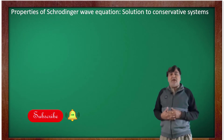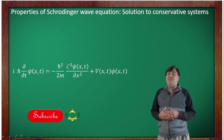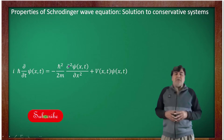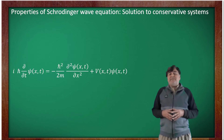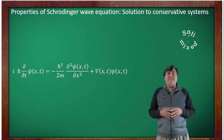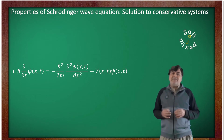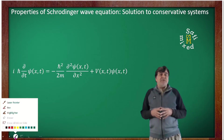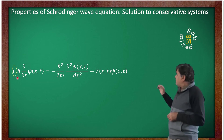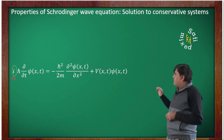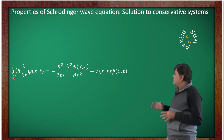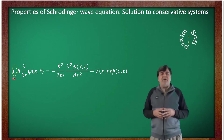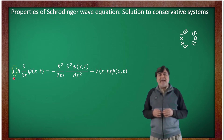The first feature is that it is a non-relativistic equation, applicable to non-relativistic both free and bound particles. Number two, the presence of iota at the left side of the equation shows that the equation supports oscillatory solutions. We know from classical physics that the sum of kinetic